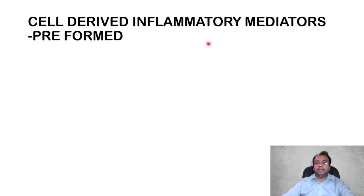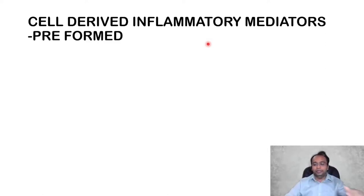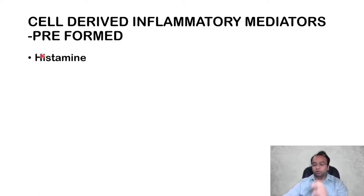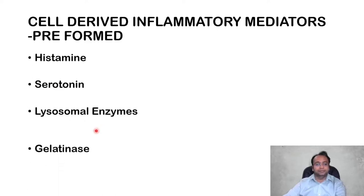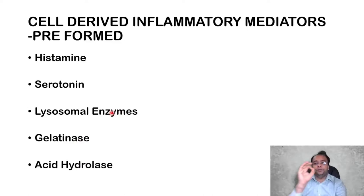The preformed cell-derived inflammatory mediators, which are ready to release upon injury, are: first, histamine (most important); second, serotonin; third, lysosomal enzymes; fourth, gelatinase; and fifth, acid hydrolase. These five are the main preformed cell-derived inflammatory mediators.